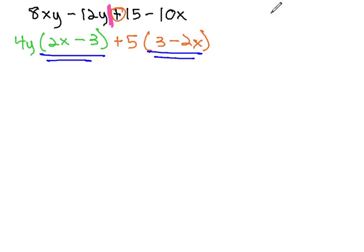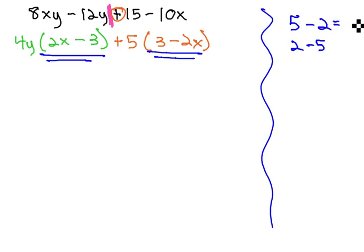The order of addition didn't matter, but let's look at subtraction. Is 5, minus 2, the same as 2, minus 5? No, one is 3, one is negative 3. They're off by a factor of negative 1, which suggests a nice little trick we're going to use.